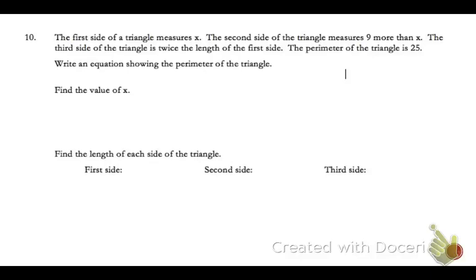Number 10. The first side of a triangle measures x. Not sure what it is. The second side of the triangle measures 9 more than whatever x is. And the third side of the triangle is twice the length of the first. The perimeter of the triangle is 25. Write an equation showing the perimeter of a triangle.